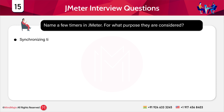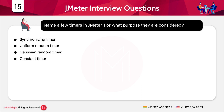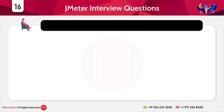The next question is: name a few timers in JMeter and what purpose they serve. Some of the most commonly used timers are: synchronizing timer, uniform random timer, Gaussian random timer, and constant timer. Many times the execution of a thread needs to be stopped for a specific time — timers are used for this purpose. They are capable of simulating real user thinking time.